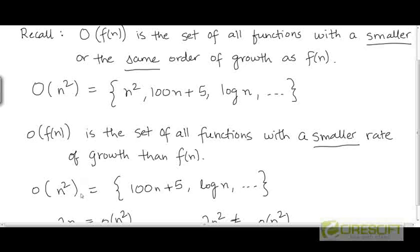Similarly, a general quadratic expression like an² for some constant a greater than 0 is not in little-o(n²), because a quadratic function also has the same rate of growth as n². But if you look at other functions like the linear function 100n plus 5, or the logarithmic function log n — these are functions that have a smaller rate of growth than n², and so they are present in the set little-o(n²).